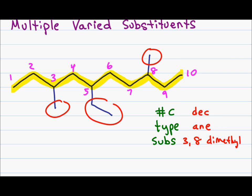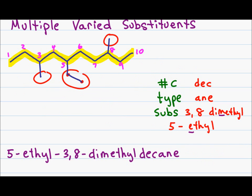My next substituent on carbon five has two carbons. Be careful when counting longer carbon substituents — carbon five in the parent chain is not part of the substituent. I have two carbons in the substituent on carbon five, so I put 5-ethyl. For the final name I alphabetize the substituents. Di, tri, and tetra only indicate a number and are not used for alphabetizing; I compare M in methyl and E in ethyl. Ethyl comes before methyl, giving a complete name of 5-ethyl-3,8-dimethyldecane.